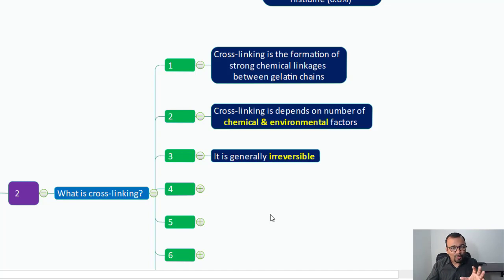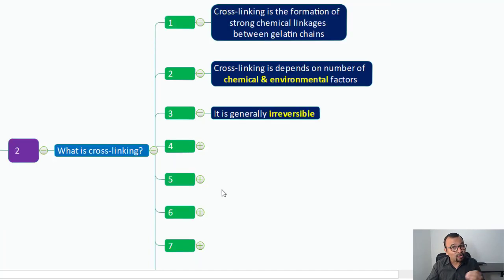Once it is formed, it is formed. You cannot reverse the cross-linking formation, and that is the reason it is very important to avoid cross-linking in the first place. In case if it is not avoidable, we will also talk about the way forward. Point number four is cross-linking makes gelatin insoluble. This is the very critical point and that is why we are discussing this topic.